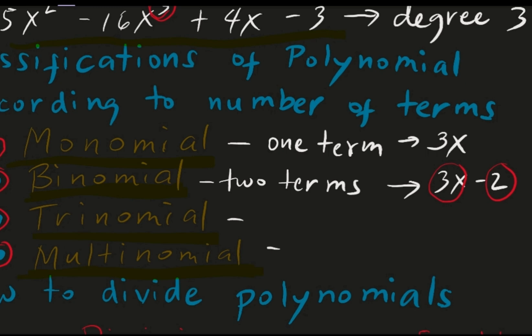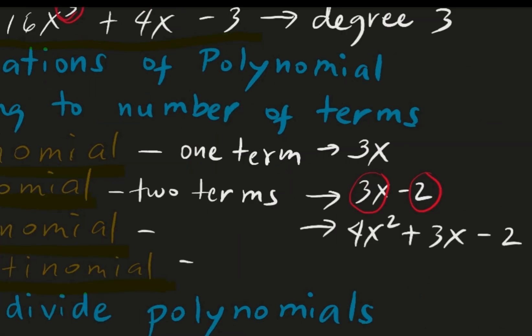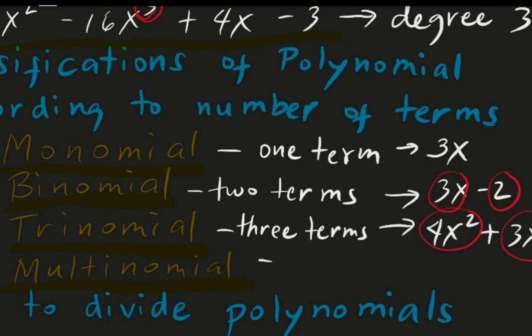If there are 3 terms, for example 4x squared plus 3x minus 2, let's count: 1, 2, 3. Do not include the plus or minus signs in the count — those are just separators between terms. We have 3 terms, and that polynomial is called a trinomial.